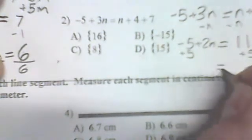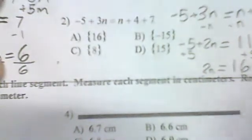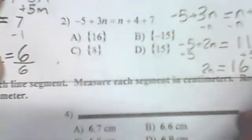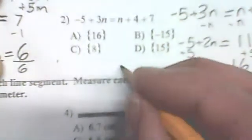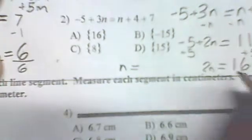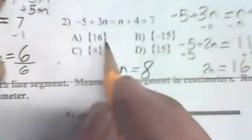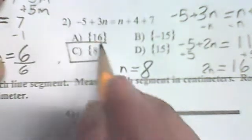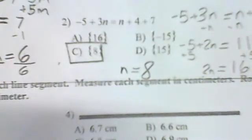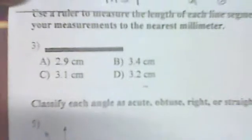After adding 5 to both sides we get 2n equals 16. Dividing both sides by 2, since 16 divided by 2 is 8, you should choose 8 for this problem.